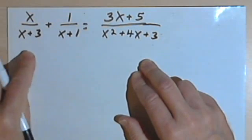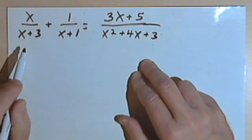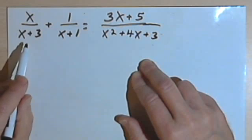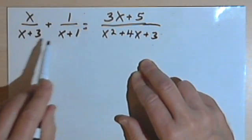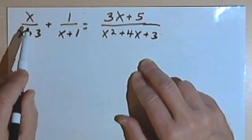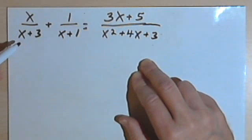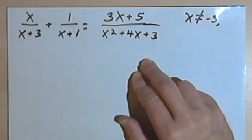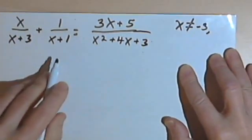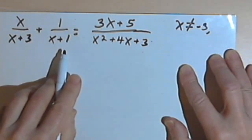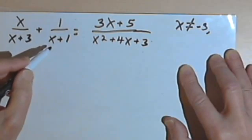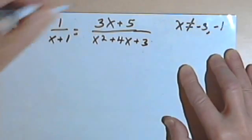The first thing you have to do when dealing with equations like this is find out what the excluded values are. Excluded values are values for x that you can't have, because you can't have a fraction with a denominator of 0. For the first fraction, x over x plus 3, if x equaled negative 3 the denominator would be 0, so x cannot equal negative 3. For the second fraction, x plus 1 equals 0 means x equals negative 1, so negative 1 is also an excluded value.